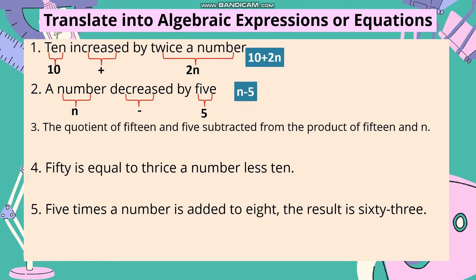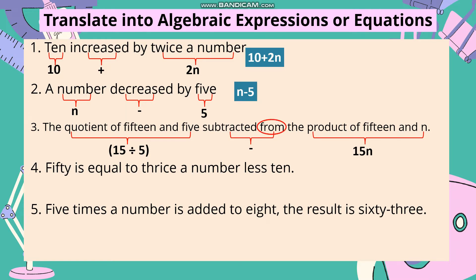Number 3: 'The quotient of 15 and 5, subtracted from the product of 15 and n.' 'Quotient of 15 and 5' in symbol is (15 ÷ 5), placed in parentheses because we will simplify it. 'Subtracted from' means minus, and because of the word 'from,' the order is reversed — the latter part comes first. 'Product of 15 and n' is 15n. So our mathematical symbol is 15n minus (15 ÷ 5).